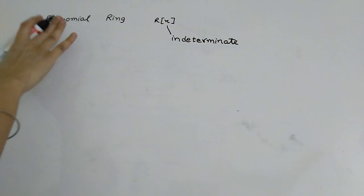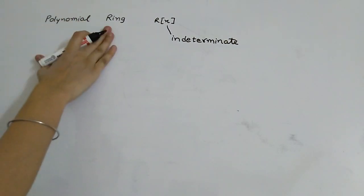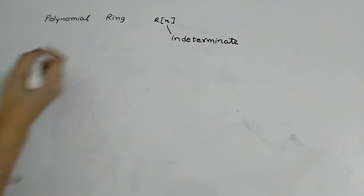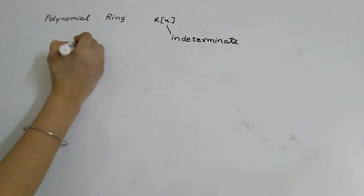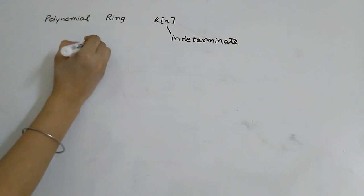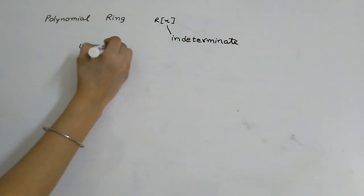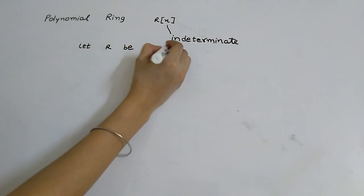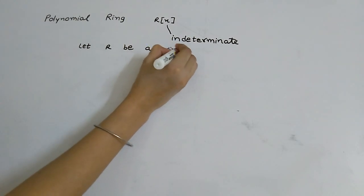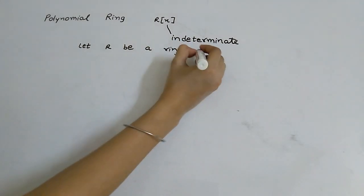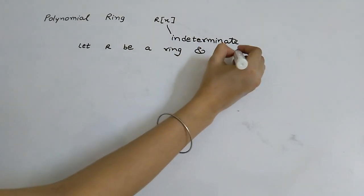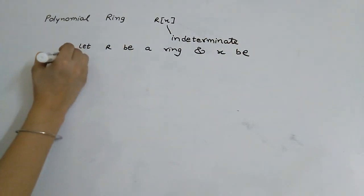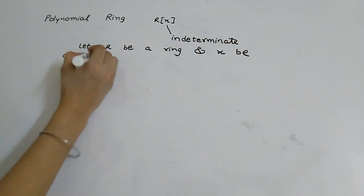Now we need a ring for the polynomial ring, so let us see its definition. Let R be a ring and x be an indeterminate.